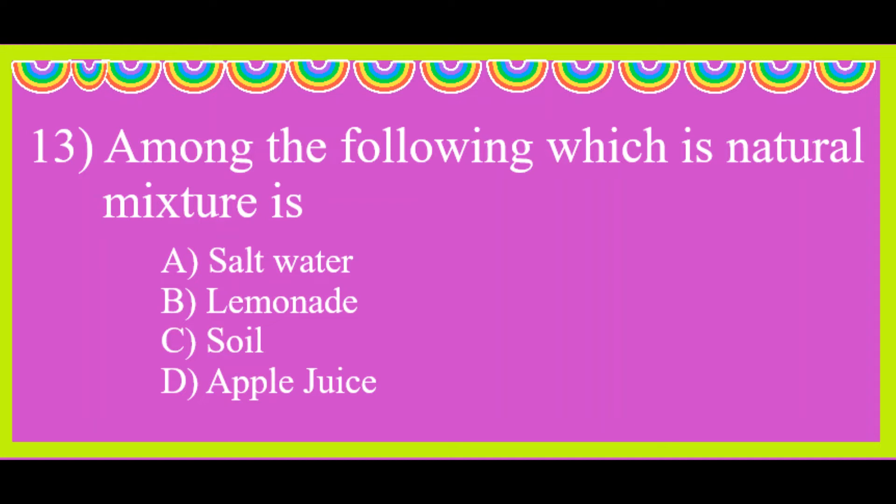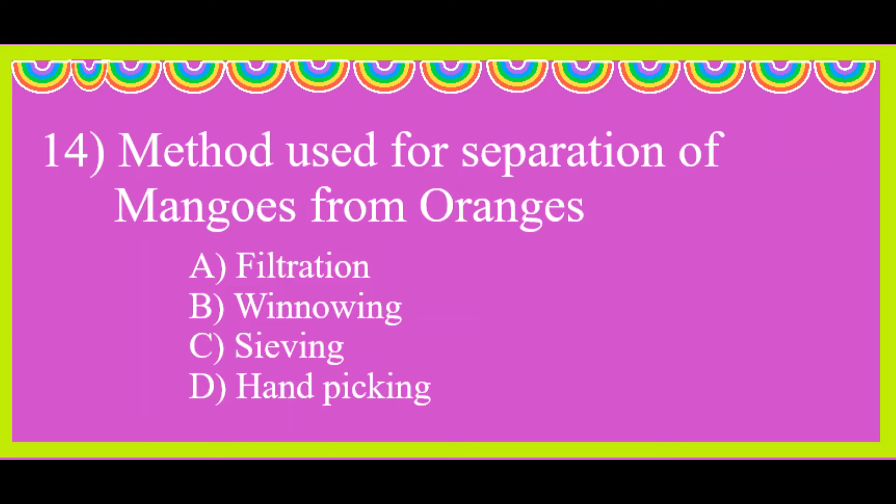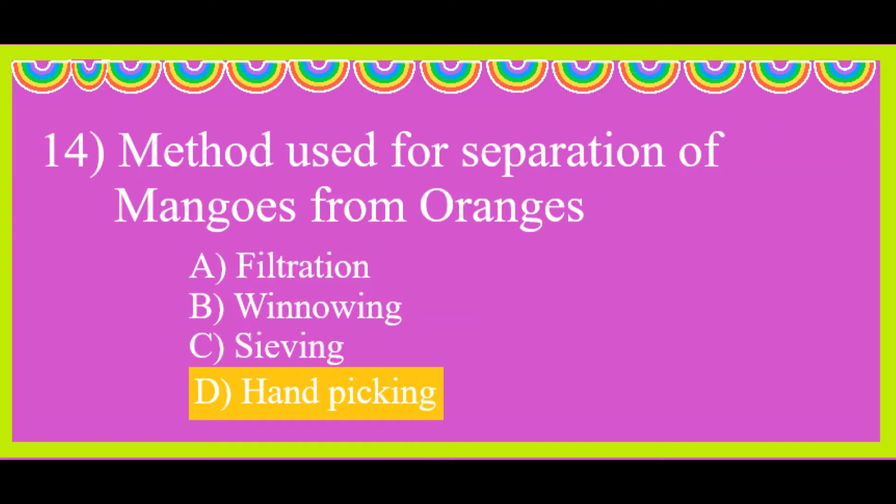Among the following, which is a natural mixture? The answer is soil. Method used for separation of mangoes from oranges is handpicking.